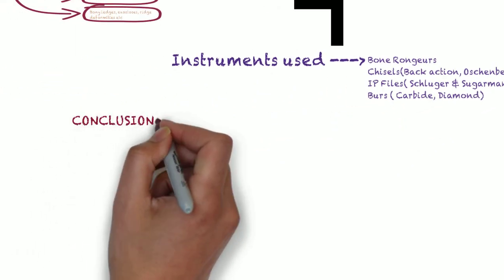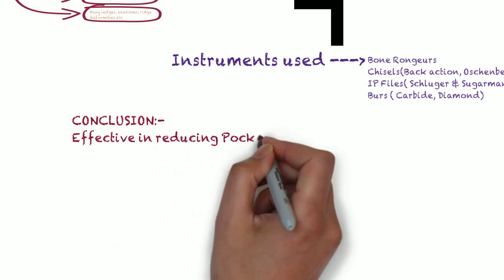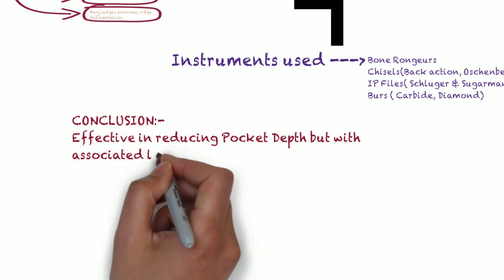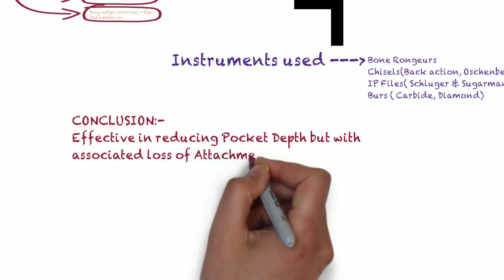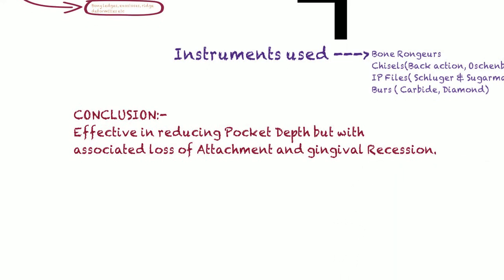To conclude, resective osseous surgery is effective in reducing pocket depth, but is associated with loss of attachment as well as gingival recession being its main disadvantage.